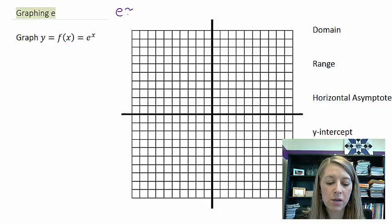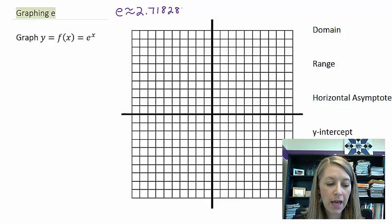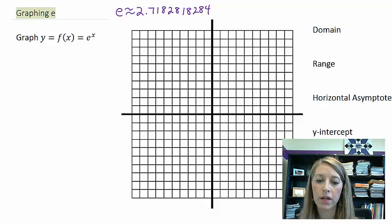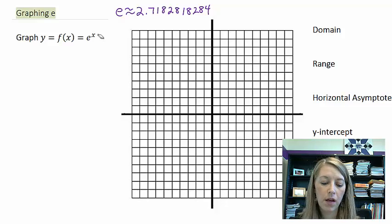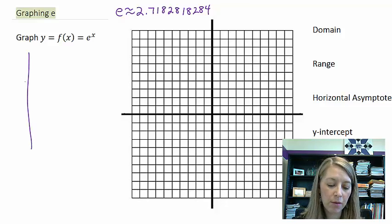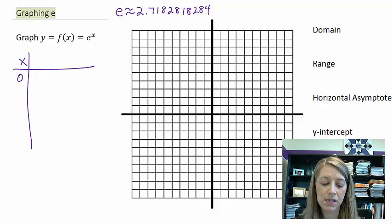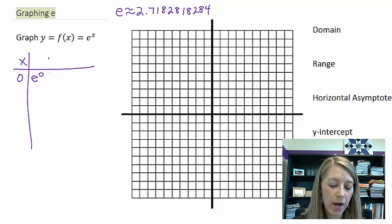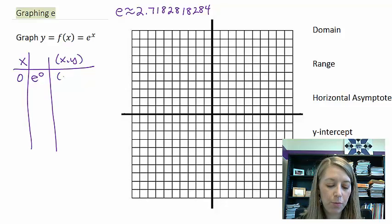Remember that e is approximately 2.7182818284, so on and so forth. So I can do this by plugging in points. The very first point that I would plug in is zero because anything to a zero exponent would give me one.